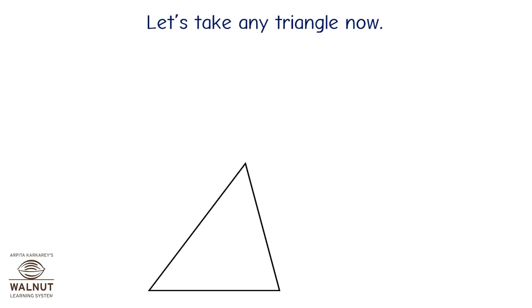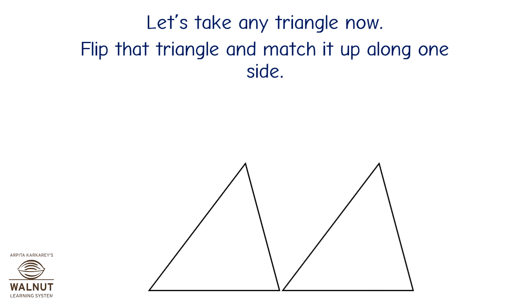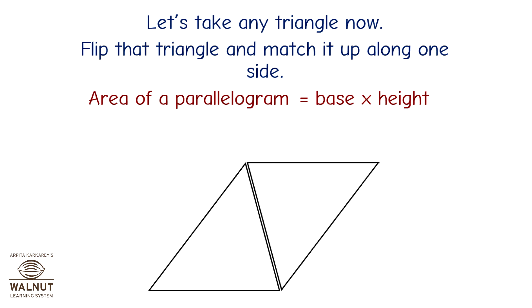Let's take any triangle now. Take a scalene triangle if you wish. Flip that triangle and match it up along one side. What do you get? You get a parallelogram. So two triangles is equal to one parallelogram. What's the area of the parallelogram? Base into height. So what's the area of the triangle? Half base into height.